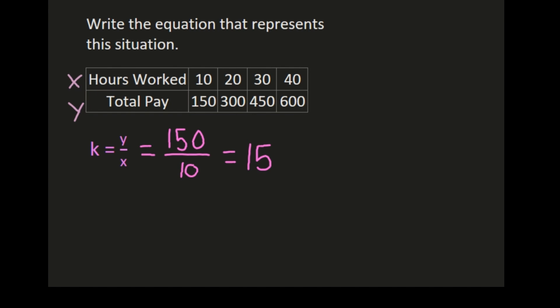Now to be sure that this is a proportional relationship, we need to test these other values as well and make sure that the constant of proportionality is the same no matter which piece of data we use. So now I'm going to plug in 300 for y and 20 for x to see if 300 divided by 20 is also 15.